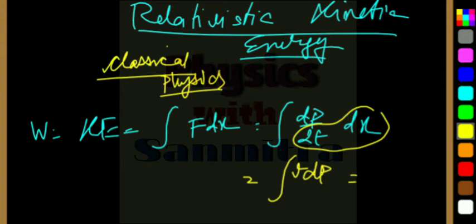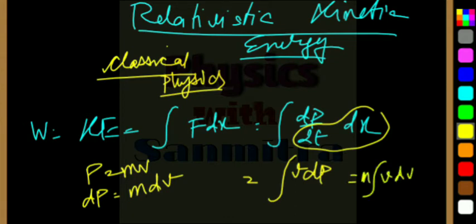Or also rather we can write, since p is equal to mv, we can write dp as m was constant mostly there. So, m into dv. If it is m into dv, we can take m common, vdv. So it was half mv squared.